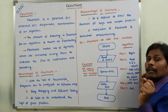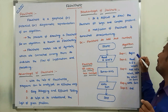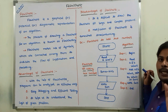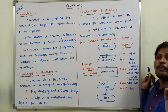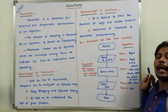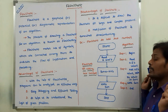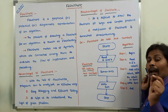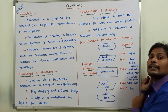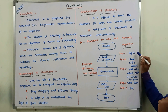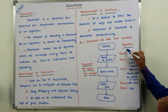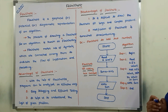First step: every algorithm should start with 'Begin.' Second step: read the values of A and B. Step 3: add the values of A and B and store the result in another variable called Sum. Step 4: write the result of the Sum variable. Step 5: End. That means every algorithm starts with Begin and ends with End. This is the algorithm for adding two numbers.